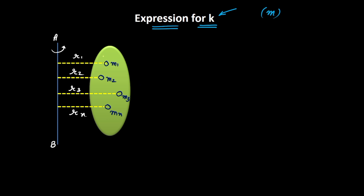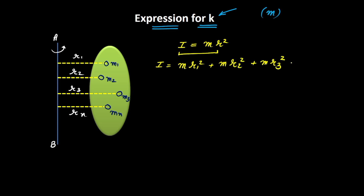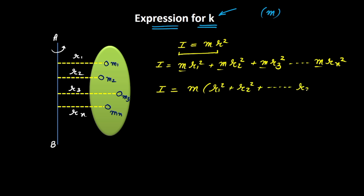Now let us find the moment of inertia of this system about this particular axis. The moment of inertia of a single point mass is given by Mr². Since there are multiple point masses, the total moment of inertia would be M·R1² + M·R2² + M·R3² + ... + M·Rn². I am writing M instead of M1, M2, M3 because I am assuming all the masses are the same. Taking M common, I = M(R1² + R2² + ... + Rn²).